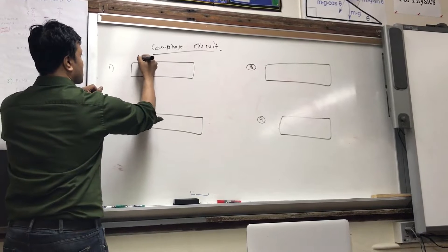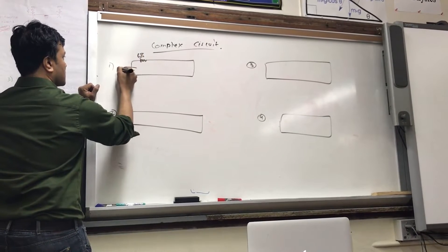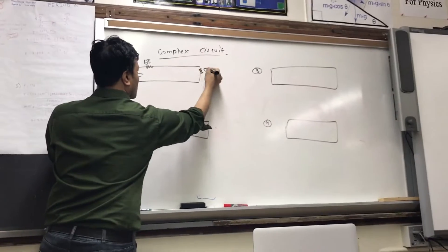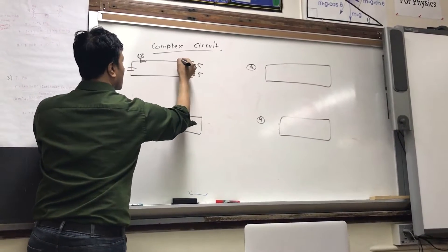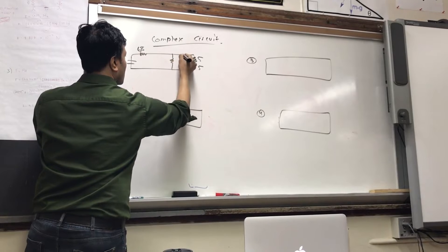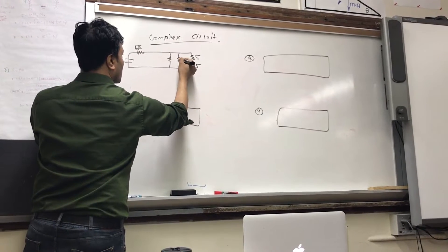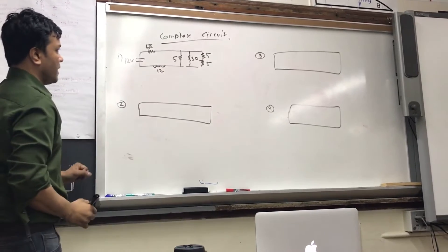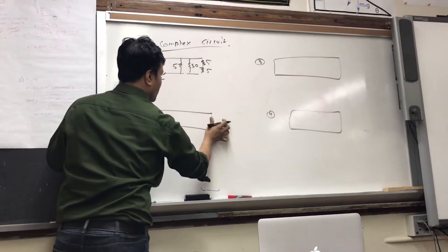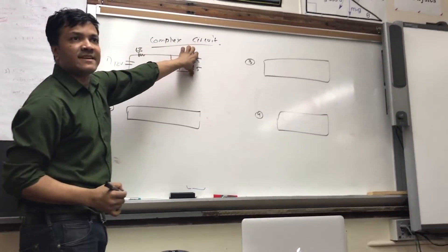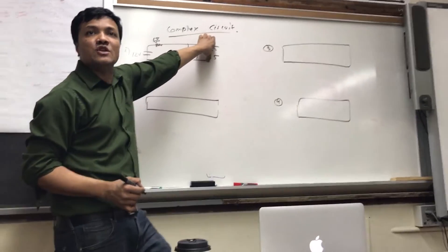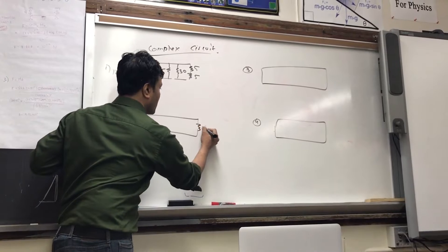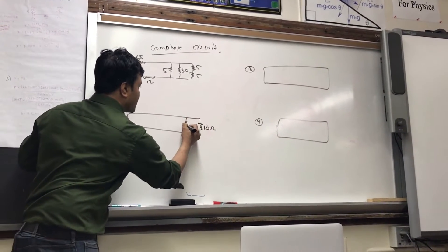What is it? Can someone remind me what it is? Five and five. Twelve. Okay, so great. So what about this one? Since this is series, we can use the Ohm's slope and we can write what? Ten. And everything else we're going to keep it.